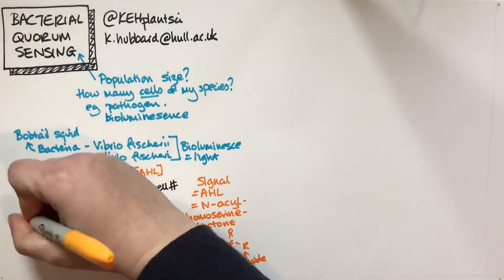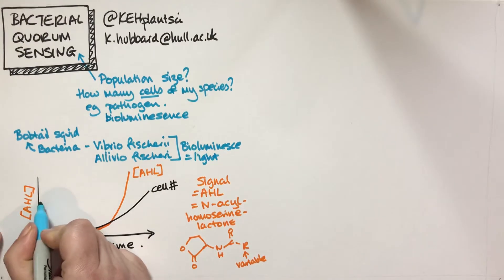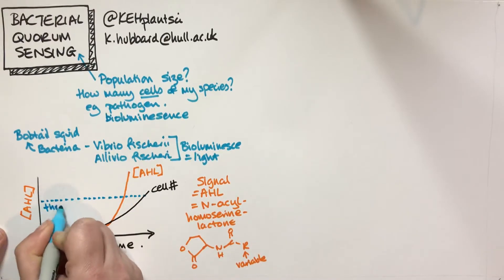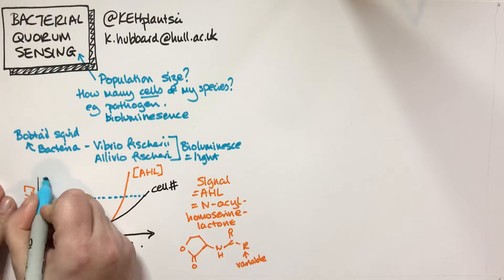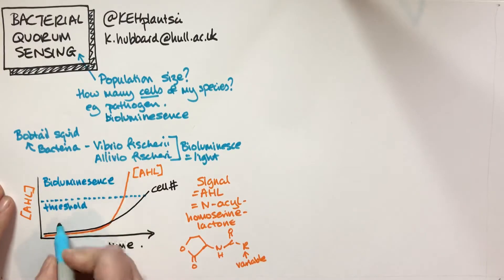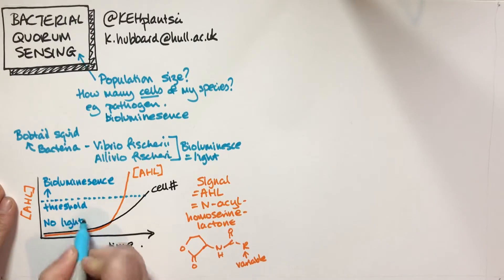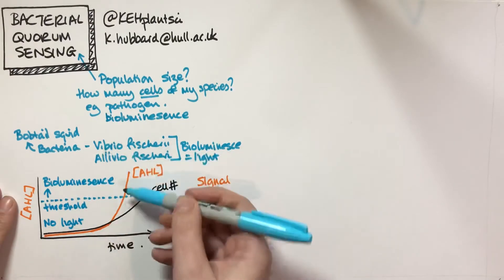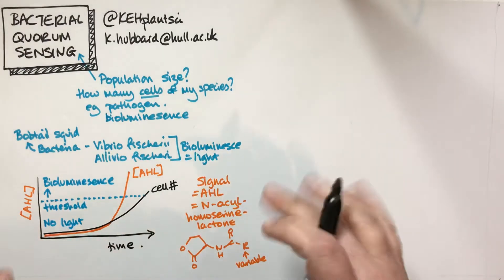If we plot the concentration of AHL, there is a threshold concentration it has to reach. Above that threshold, you get bioluminescence, and below the threshold, there's no light - the bacteria just look normal. But if the concentration goes above the threshold, then bioluminescence switches on. So we end up with this population density-dependent behavior. Let's think about how that works at a cellular level, considering two different situations: a bacterial cell at low population density and one at high population density.